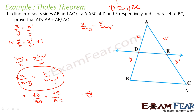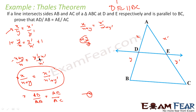We have this triangle, DE is parallel to BC. We wrote the basic form of the theorem: X by Y is equal to X dash by Y dash. If we add one directly here it becomes X plus Y by Y, but I was looking for X by X plus Y form. So I took the reciprocal — it becomes Y by X is equal to Y dash by X dash. Then adding one on each side, this becomes X plus Y by X is equal to X dash plus Y dash by Y dash. I got the answer.